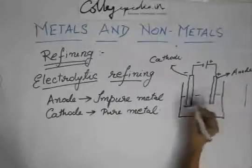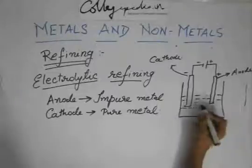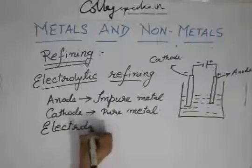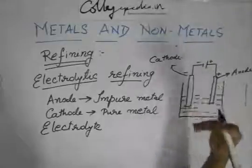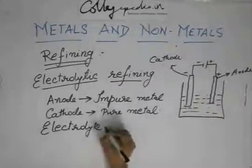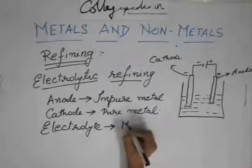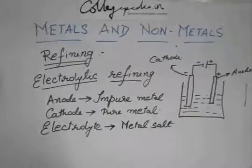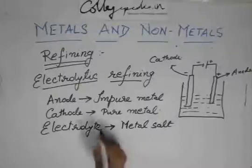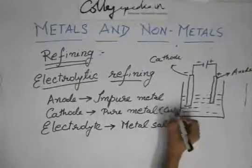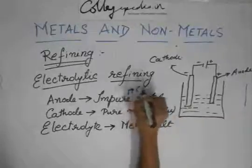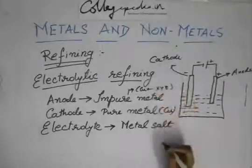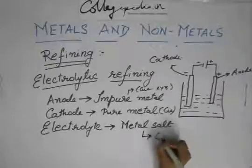The solution in which the whole system is dipped is known as the electrolyte — that is a metal salt. For example, if we are taking copper: the cathode is pure copper, the anode is impure copper with some XYZ impurities, and the electrolyte is a metal salt, perhaps copper sulphate.